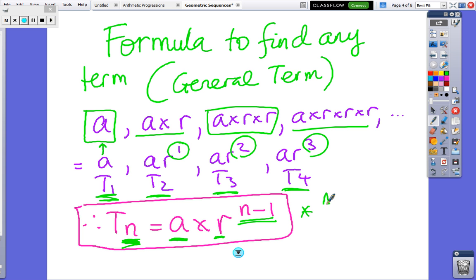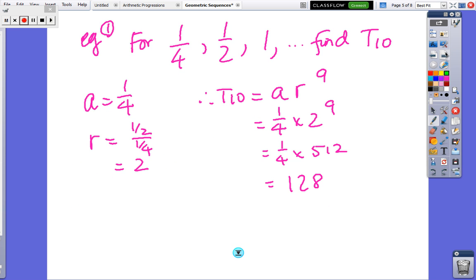So with APs, just to remind you, when we had TN, it was A plus (N-1)D. Now with GPs, we've got TN equals A times R to the (N-1). And you've got to make sure you don't get them muddled up. So let's see how we can use it.